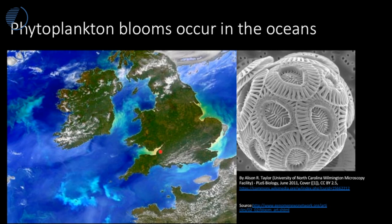You can see here the Bristol Channel, the Wash and Lincolnshire, and down into Norfolk. These bright areas shown on this satellite image show a bloom of phytoplankton in the ocean, allowing many phytoplankton to increase because there are more nutrients available. These blooms show up on satellite images because they reflect light more than ocean areas with less phytoplankton.